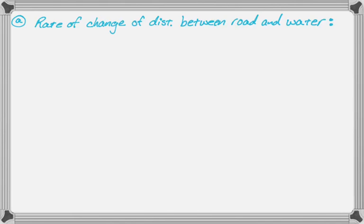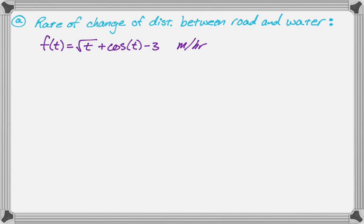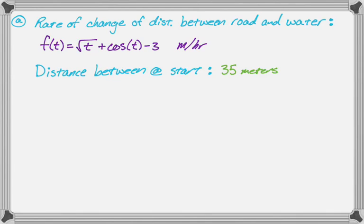We're given a lot of stuff here. First, the rate of change of the distance between the road and the water is f of t — radical t plus cosine of t minus three — in meters per hour. We're told the edge of the water gets closer to the road, which means this rate of change is actually negative. The distance between the edge and the road at the beginning is 35 meters. The storm lasts five hours, so if it starts at t equals zero, it ends at t equals five hours.